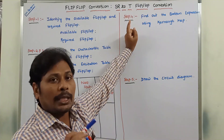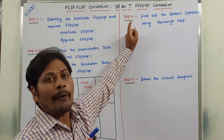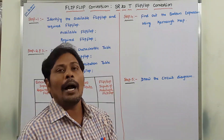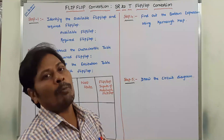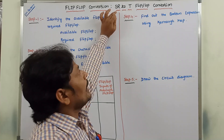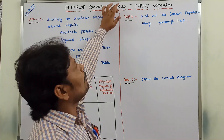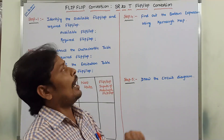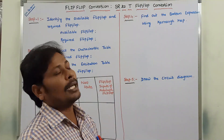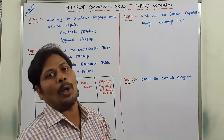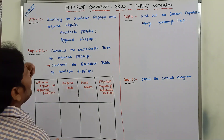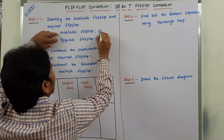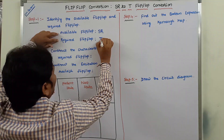To convert SR flip-flop to T flip-flop we have to follow five steps. The first step is: identify the available flip-flop and required flip-flop from the given problem statement. The given flip-flop is called the available flip-flop, that is SR flip-flop, and the desired flip-flop is T flip-flop, called the required flip-flop.